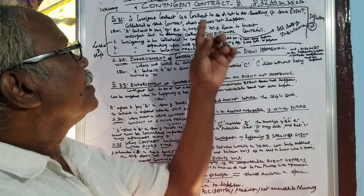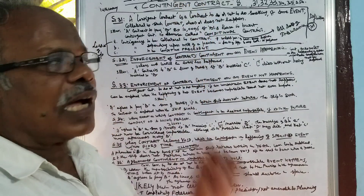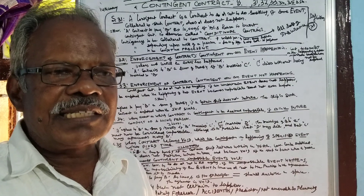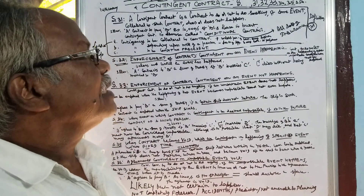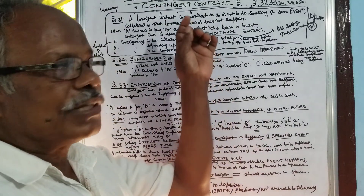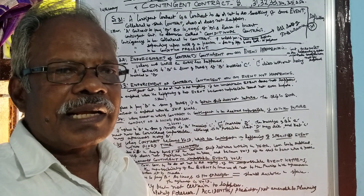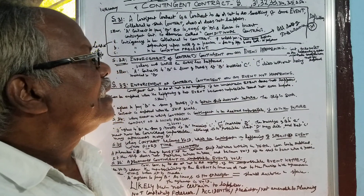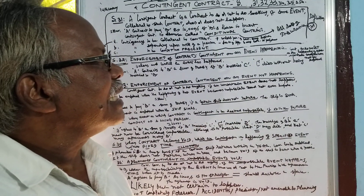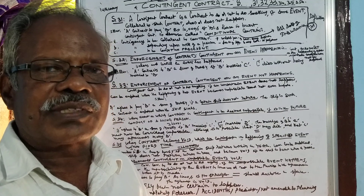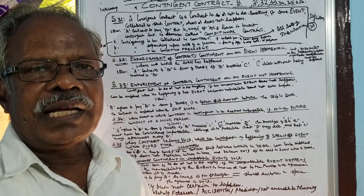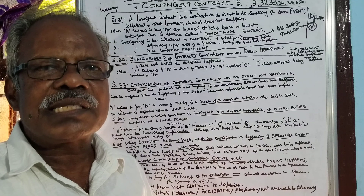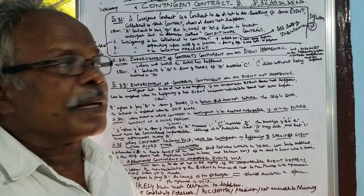Today we take up the topic Indian Contract Act 1872, in which we are going to see the particular topic Contingent Contract, which is covered under sections 31, 32, 33, 34, 35, and 36. Totally we are going to see six sections in this topic.